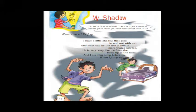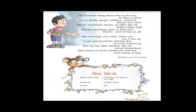Third stanza: 'The funniest thing about him is the way he likes to grow, not at all like proper children, which is always very slow.' The poet finds it very funny or strange the way the shadow increases in size. The shadow grows immediately, whereas children take time to grow. The shadow's height increases due to the reflection, but the children's height does not increase in the same way.